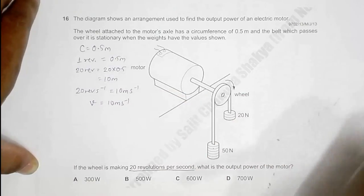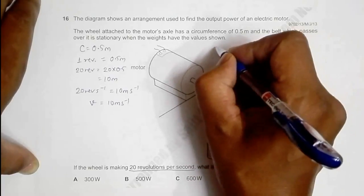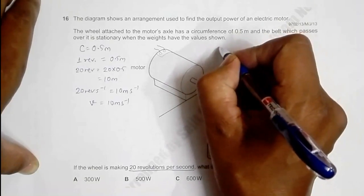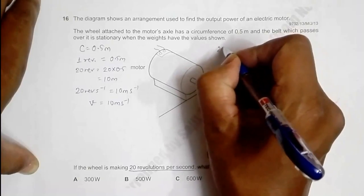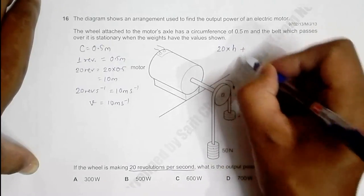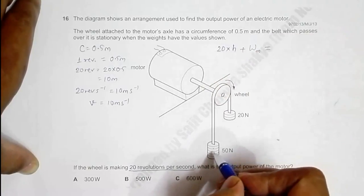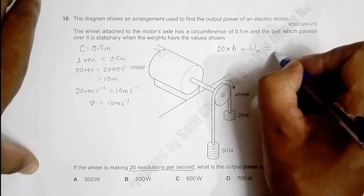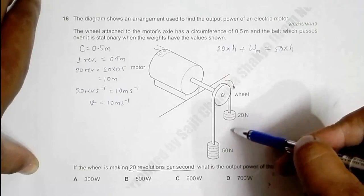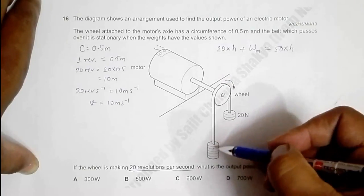Now, if this thing remains stationary here, it means the work done by this 20 newton force times the height it goes down, plus the work done by motor, should be equal to the work done by the 50N weight in rising. If I assume h is the height fallen by the 20N weight, the height risen by the 50N weight should also be h.